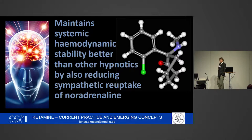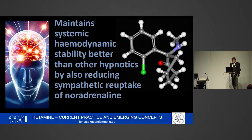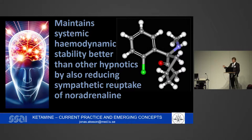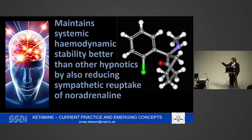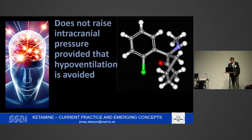We know that ketamine maintains systemic hemodynamic stability better than other hypnotics. All hypnotics that we use have a negative inotropic effect on the heart, and so does ketamine, but ketamine also reduces sympathetic reuptake of adrenaline — noradrenaline or norepinephrine — which promotes hemodynamic stability. If we have patients in very severe shock there is a less pronounced effect, as you all know, but still the hemodynamic stability is much better than with other hypnotics.